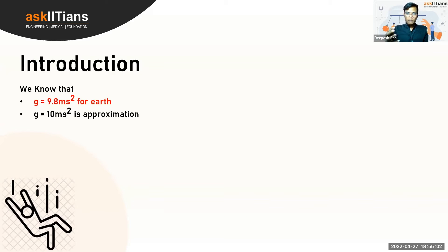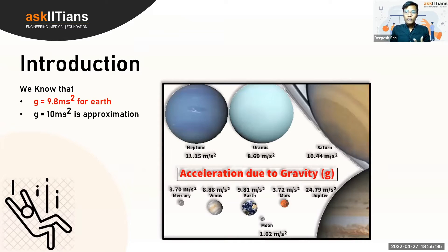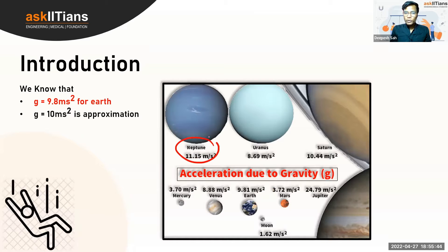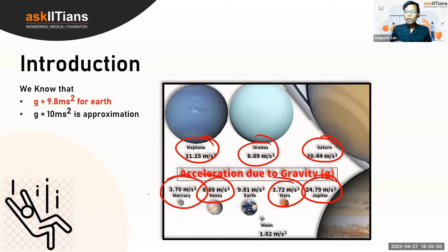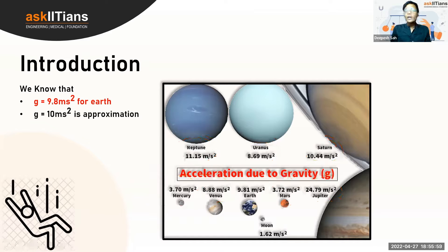But what will be the real-life effects if I actually change the value of g from 9.8 to 10? You can understand this by noting that the value of g varies from planet to planet. For Earth it is 9.8, but for Neptune, Uranus, Saturn, Jupiter, Mars, Venus, and Mercury, all the different planets have different values of g, and those differences cause very different things to happen.